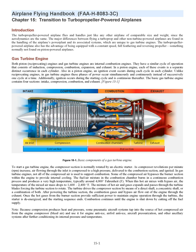Gas turbine engine. Both piston (reciprocating) engines and gas turbine engines are internal combustion engines. They have a similar cycle of operation that consists of induction, compression, combustion, expansion, and exhaust. In a piston engine, each of these events is a separate distinct occurrence in each cylinder, and an ignition event occurs during each cycle in each cylinder. Unlike reciprocating engines, in gas turbine engines these phases of power occur simultaneously and continuously instead of successively one cycle at a time. Additionally, ignition occurs during the starting cycle and is continuous thereafter.